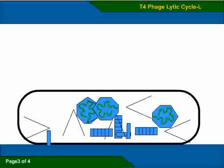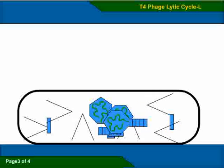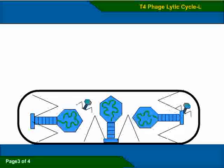Once the three parts of the virus are reproduced - the heads, the tails, and the tail fibers - it begins to reassemble into new phage particles.